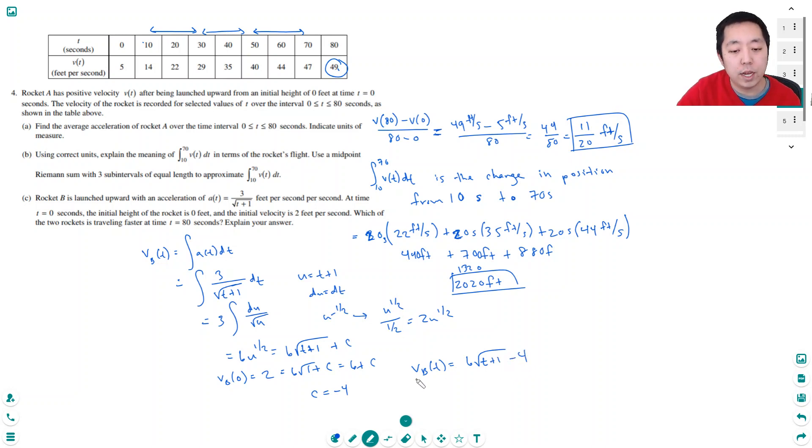And so then I plug in 80. That's 6 root 81 minus 4. Root 81 is 9. 6 times 9 is 54 minus 4, which equals 50 feet per second. And as you can see, rocket B is going faster.